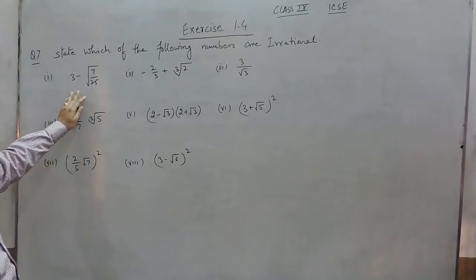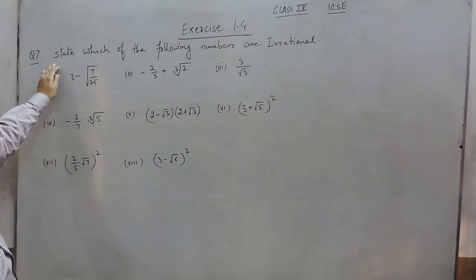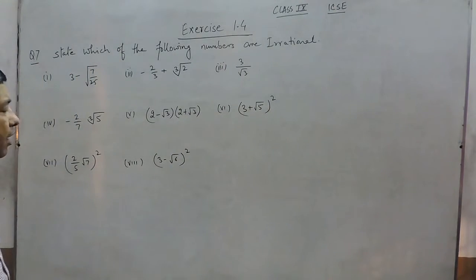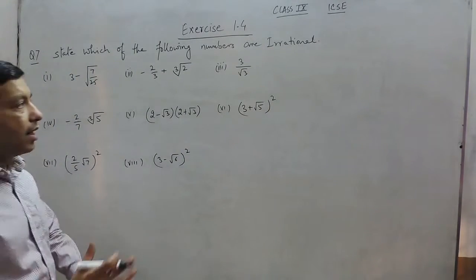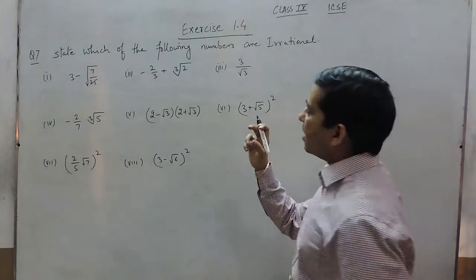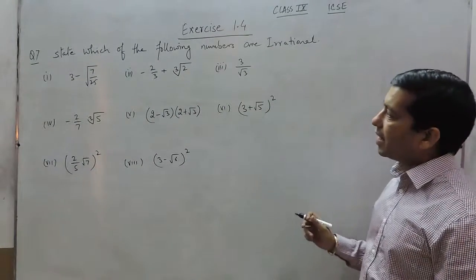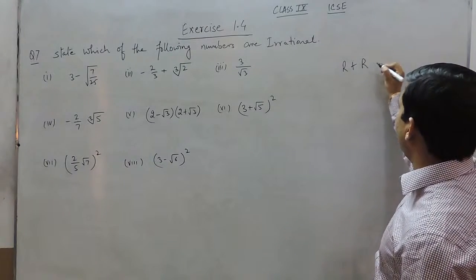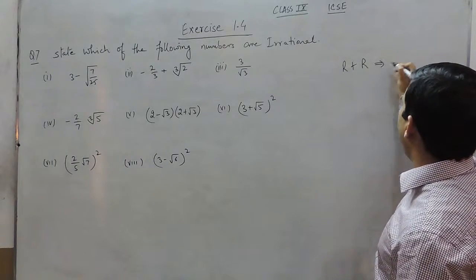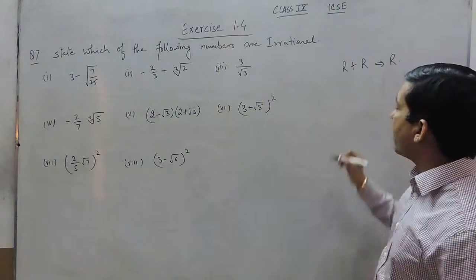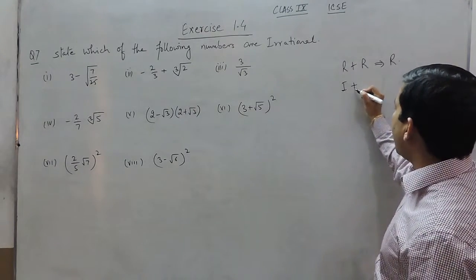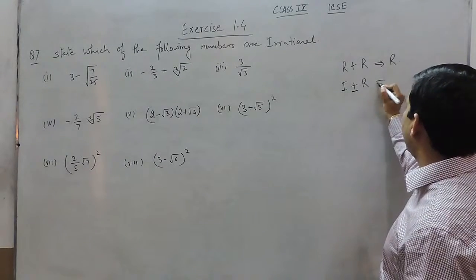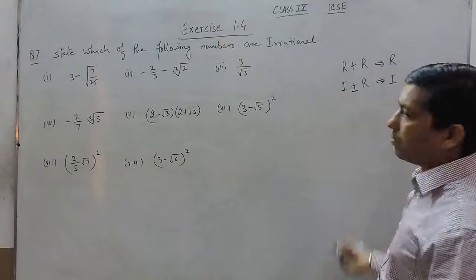Hello everyone. When we talk about question number 7, it states: which of the following numbers are irrational? We already told you that any number which has an irrational factor is known as an irrational number. A rational number plus a rational number is always a rational number, while an irrational number added to or subtracted from a rational number will be an irrational number.